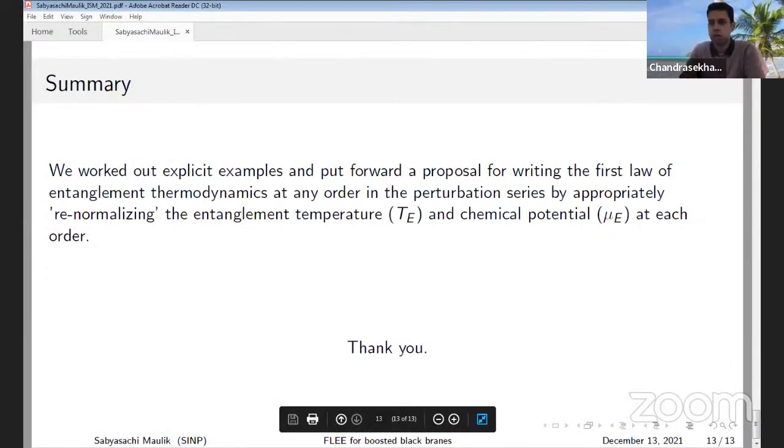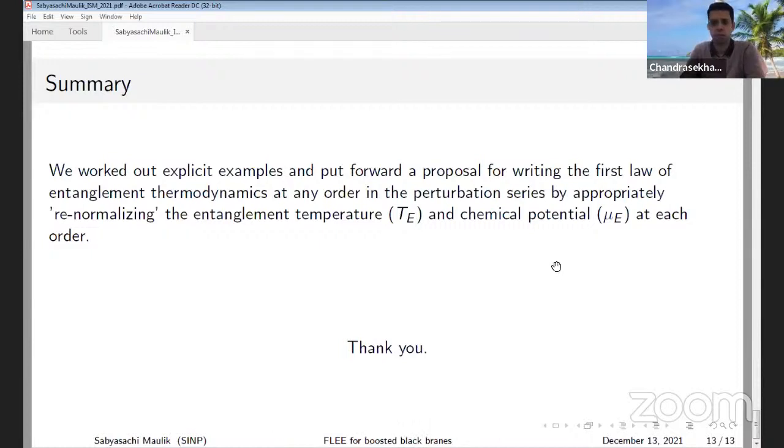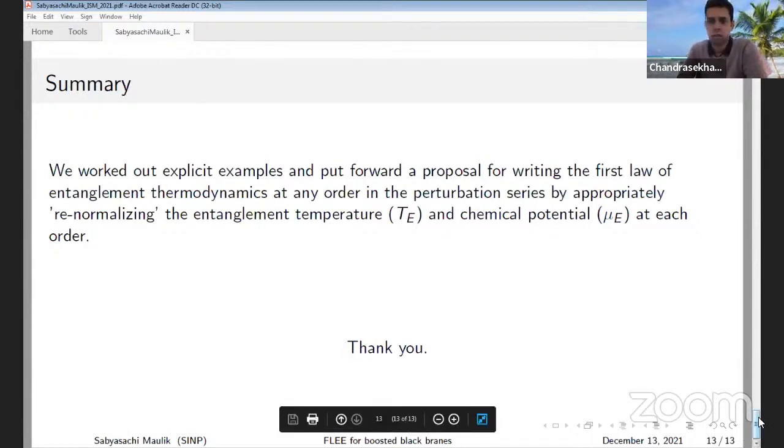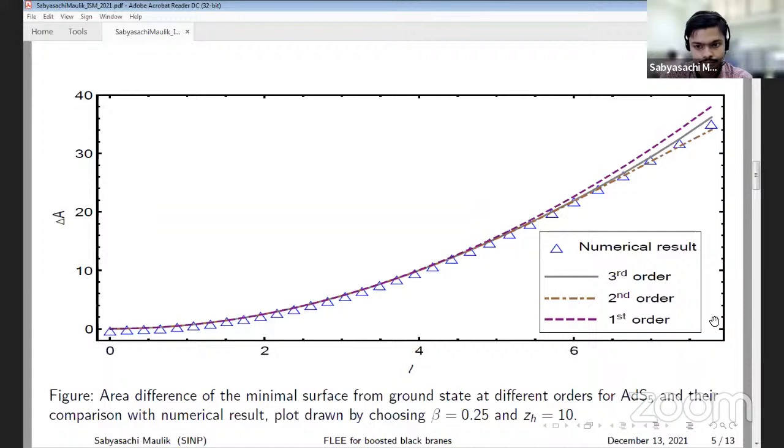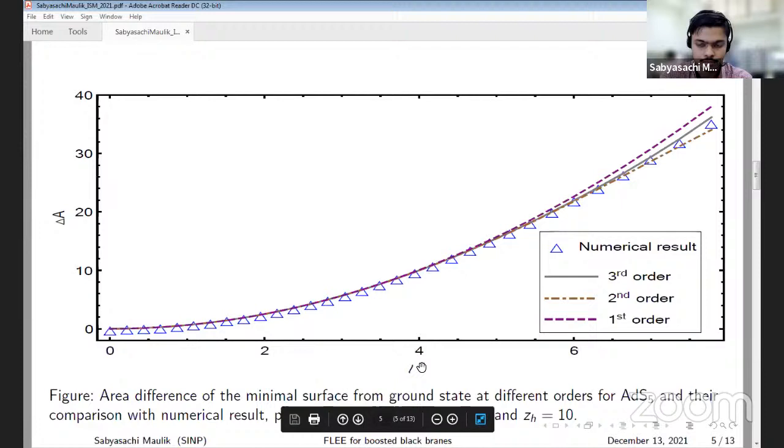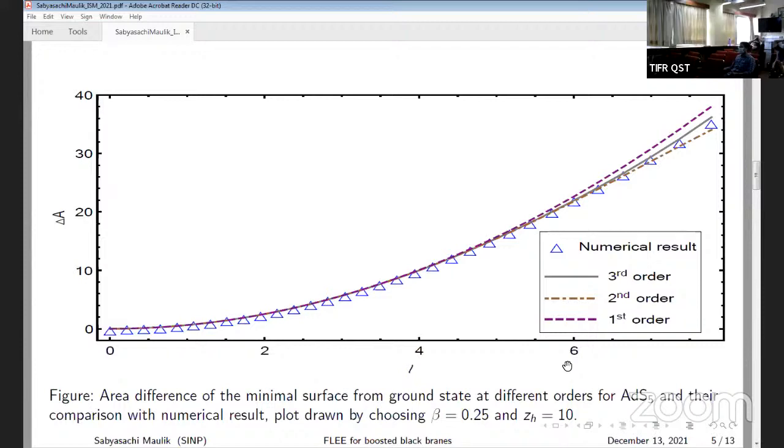Thank you. I had a question - you had a plot of area versus L, right? Why is there a mismatch at higher orders in L? For larger values, why is there a mismatch with the numerical results? Because we are using a perturbation series approximation to calculate this area, this is not an exact calculation so it is only valid for very small subsystem lengths.